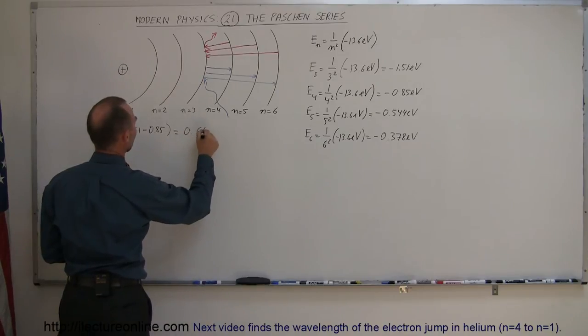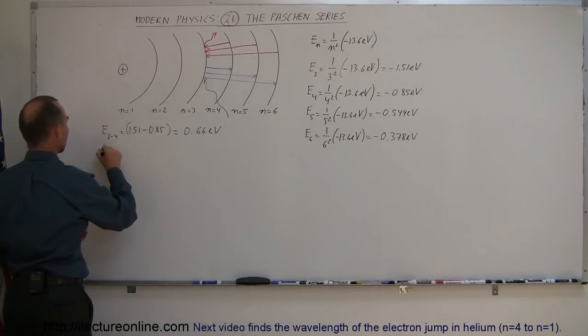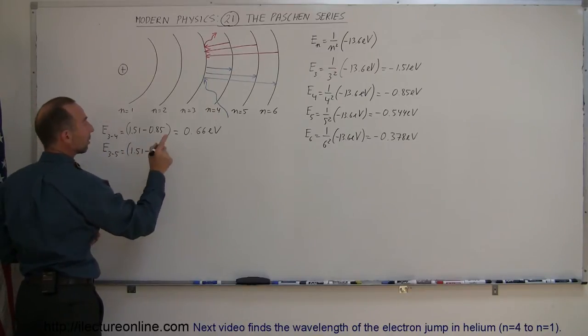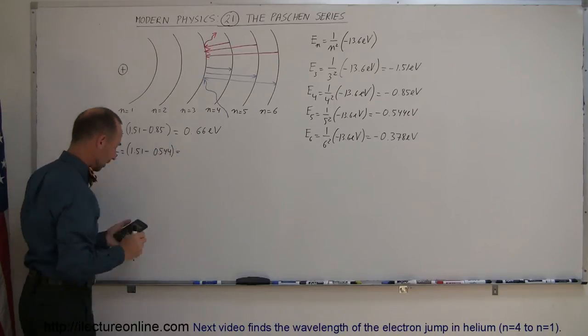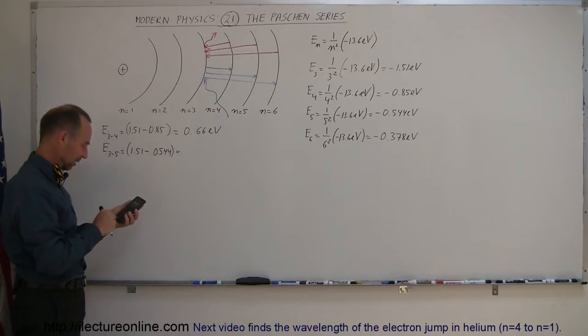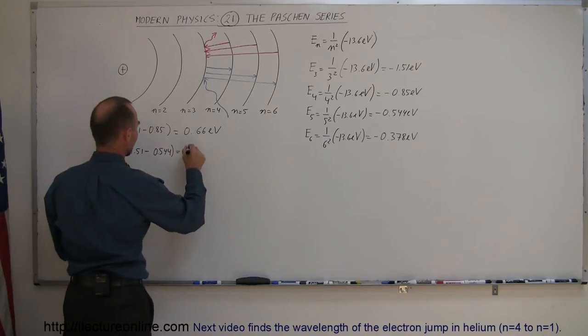The energy difference between 3 and 5 is 1.51 minus 0.544, and that's kind of a brain twister, so let me calculate it. 1.51 minus 0.544 equals 0.966 electron volts.